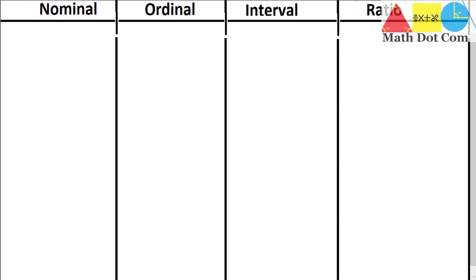First, we have the nominal scale. The nominal scale basically refers to names, tags, labels, or categories. It is not referring to any numerical value. You can assign numbers to the names, tags, or labels you are using for measuring in your research — for example, you can assign 1 or 2 — but it is not necessary that nominal scale assigns numbers in an ordered manner. There is no order required in nominal scale.